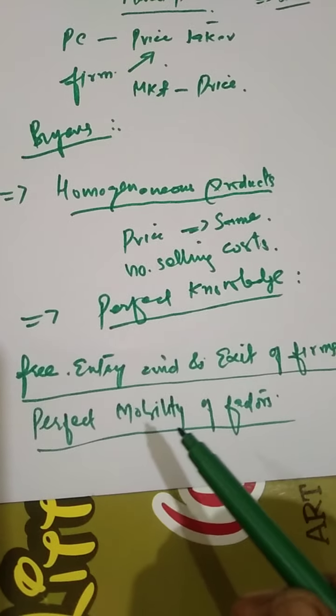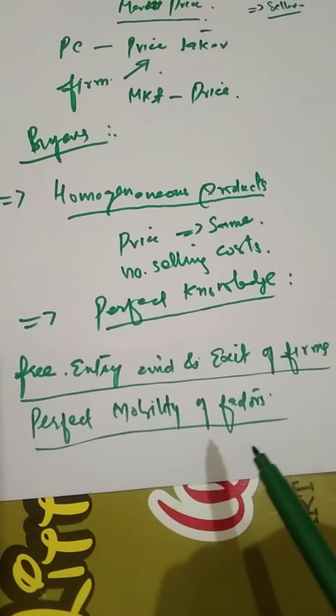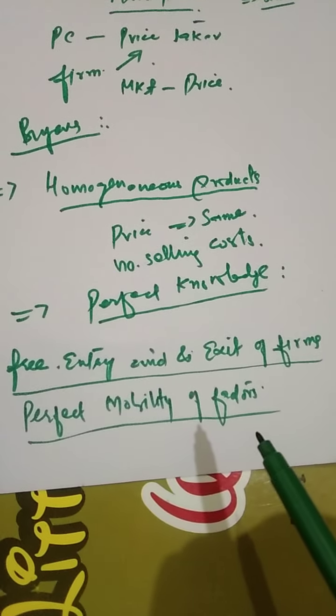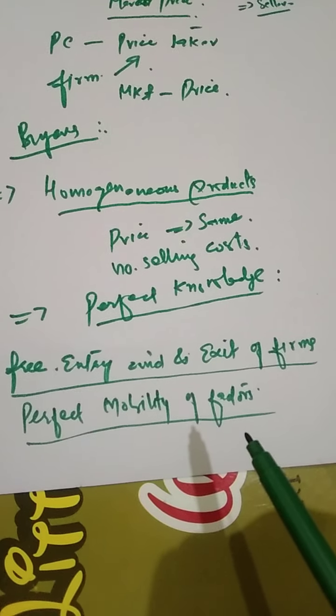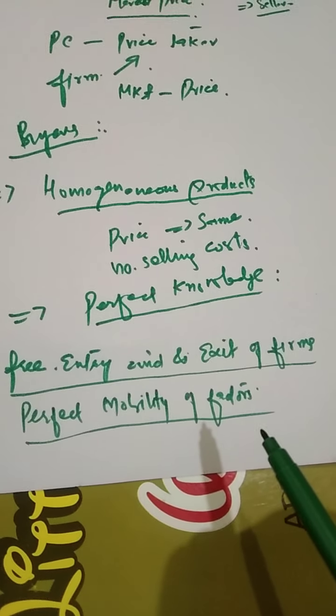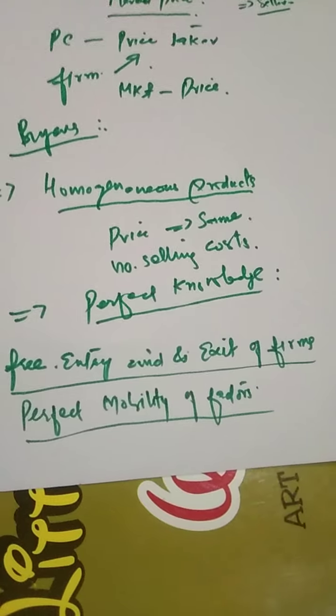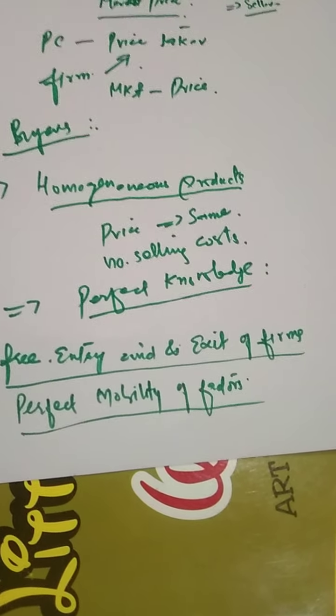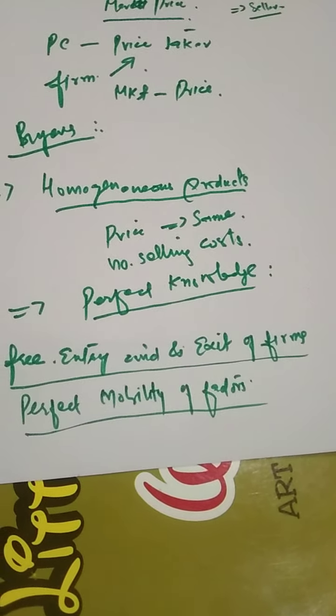Another feature is the perfect mobility of factors of production. Under perfect competition, factors of production are perfectly mobile. Factors will move to that industry which pays them the highest remuneration. They are free to move from one firm to another, from one occupation to another, or from one line of production to another. There are no restrictions — they are perfectly mobile.